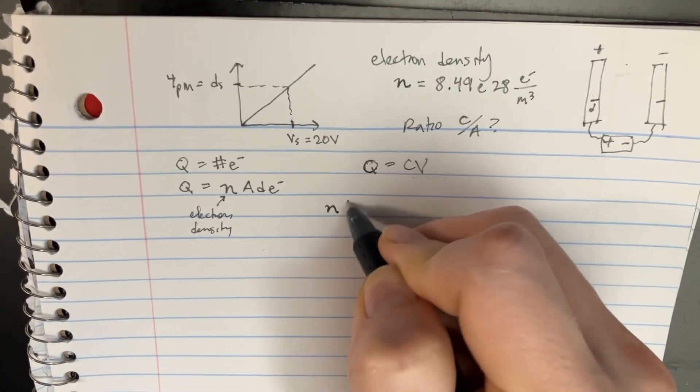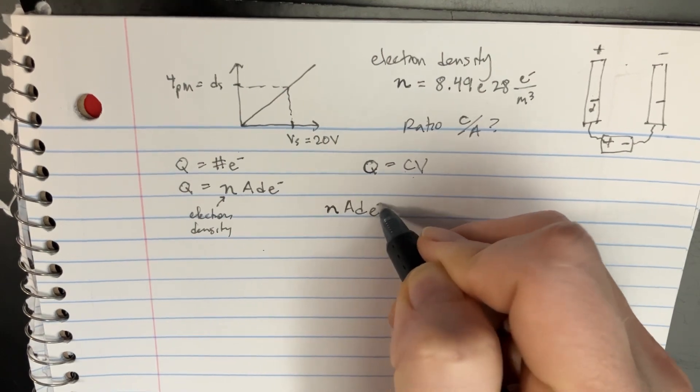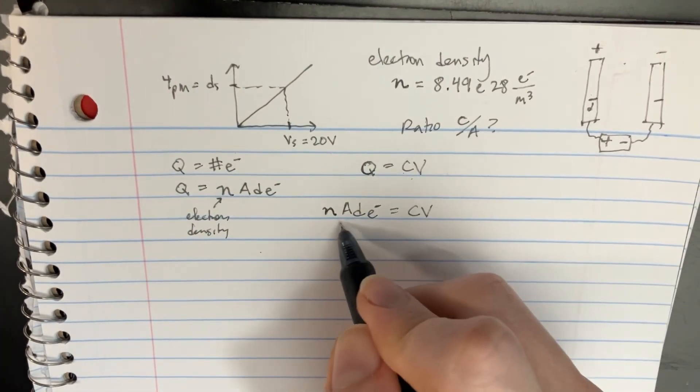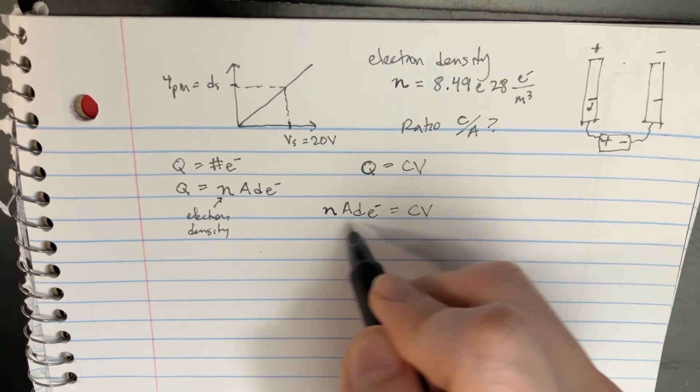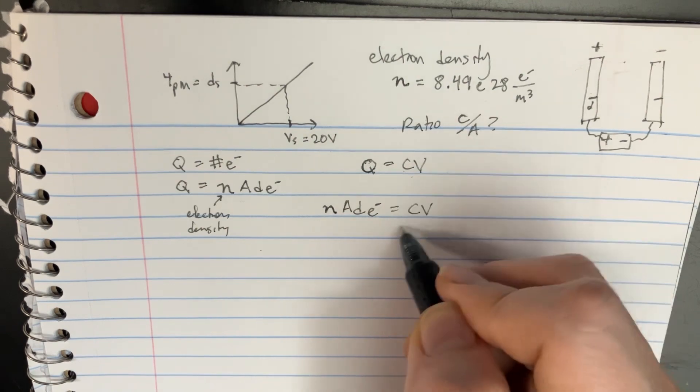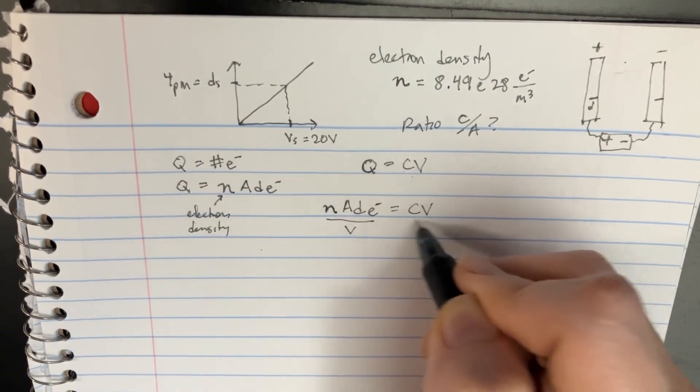So that's n A d e equals C V, and from there we can say let's rearrange this by shifting V over here and A over here.